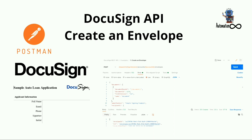In this video, we are going to see how to call the CreateAnEnvelope API. The CreateAnEnvelope API takes a document that we want to send to a recipient to sign, along with the recipient's information, so that it can send an envelope over email with the attached document to the specified recipient to sign it. Let's get started without any further delay.